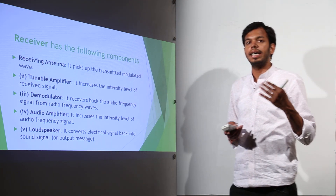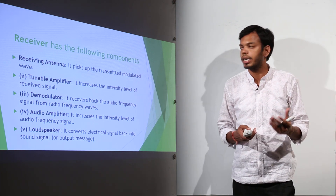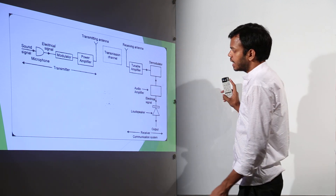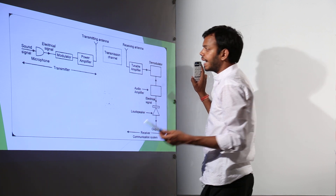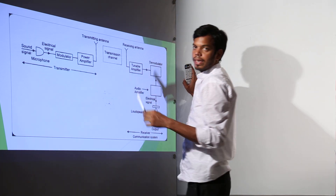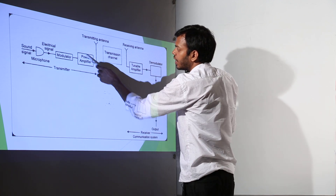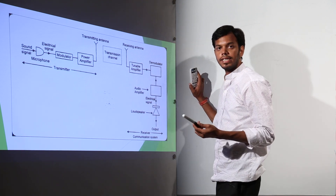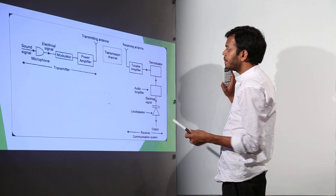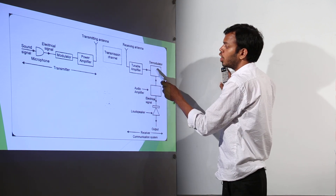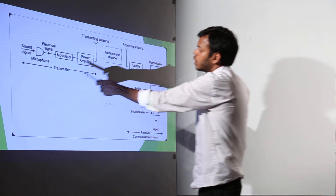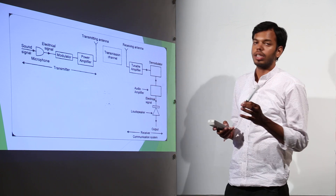After demodulation we have the actual message signal. The audio amplifier then adds power to the message signal, and after the audio amplifier, the loudspeaker outputs the sound. Looking at the block diagram: a sound signal through a microphone is converted to electrical signal; the modulator superimposes it; the power amplifier boosts it; the transmitting antenna sends it. On the receiving end, the receiving antenna picks it up; the tunable amplifier boosts it; the demodulator separates it from the carrier wave; the audio amplifier boosts the signal; and the loudspeaker outputs the audio.